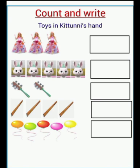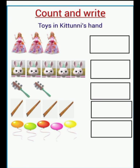First we see some dolls. How many dolls are here? Let's count: one, two, three. Yes, we see three dolls. Then we see some rabbit dolls. Let's count: one, two, three, four, five. We see five rabbit dolls.